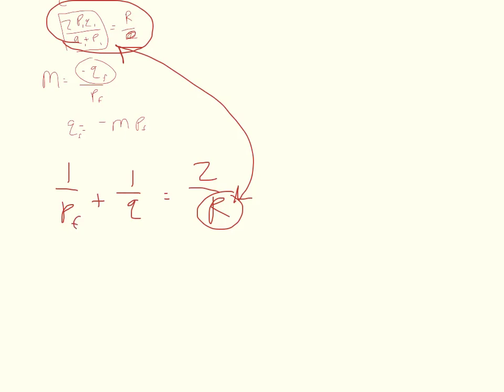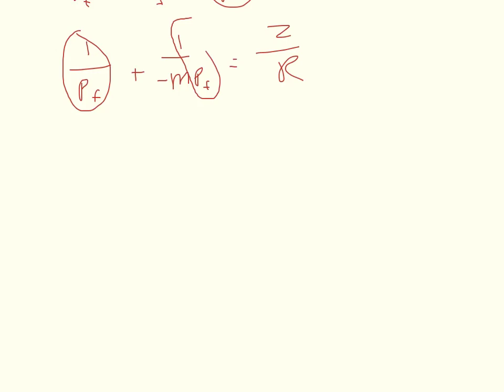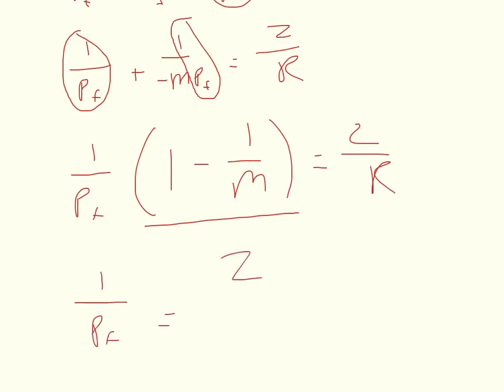Now I'm going to go ahead and denote that this is the P final and this is the Q final. And I'm going to go ahead and substitute Q final with negative MP. So 1 over P final plus 1 over negative MP final is equal to 2 over R. Then what I need to do is I need to isolate the term that I'm trying to solve for. So in order to do that I'm going to factor. So if you look here this term is 1 over P final, and this term also has 1 over P final. So I can factor out 1 over P final. 1 over P final times 1 minus 1 over M is equal to 2 over R.